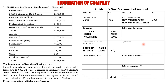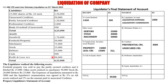There are no debenture holders in the sum, so we start directly with creditors. Preferential creditors amount to Rs. 3,000, so we note that. Next are unsecured creditors: Rs. 50,000 given in the question, plus Rs. 1,05,000 (the unsecured portion of partly secured creditors), totaling Rs. 1,55,000.